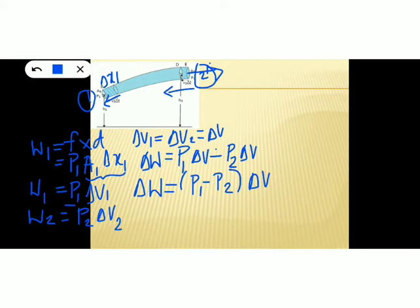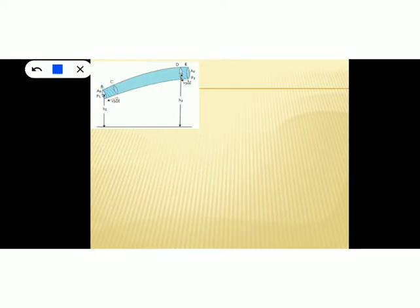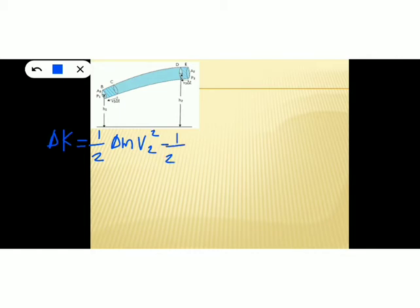This work done changes the kinetic energy, pressure energy, and potential energy of the fluid. That is the first part of the proof of Bernoulli's principle. Now in the second part we find the change in kinetic energy of the fluid. Change in kinetic energy delta K is given by half delta M V2 squared minus half delta M V1 squared.